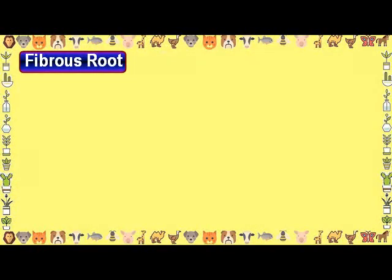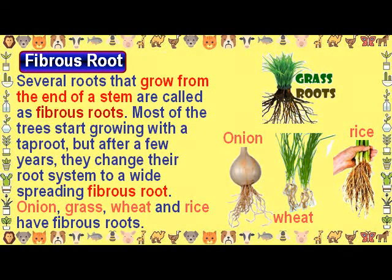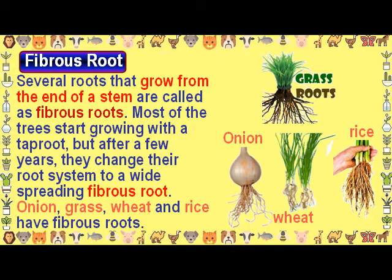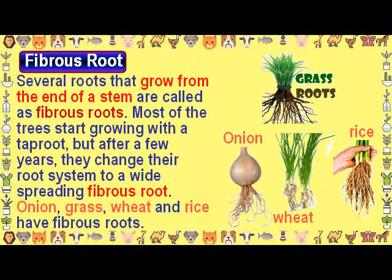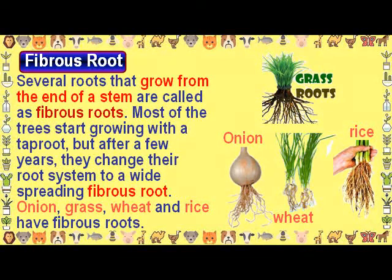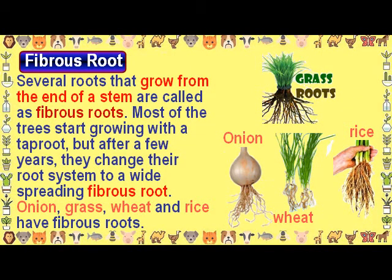Fibrous Root: Several roots that grow from the end of a stem are called fibrous roots. Most trees start growing with a tap root, but after a few years they change their root system to a wide-spreading fibrous root. Onion, grass, wheat, and rice have fibrous roots.